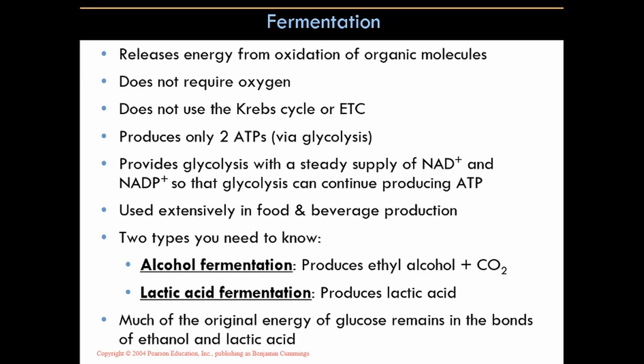Alcohol fermentation produces ethyl alcohol (ethanol) plus carbon dioxide — both are waste products. Lactic acid fermentation produces lactic acid or lactate. This is a very inefficient process: about 90% of the original energy of the glucose molecule still remains in the bonds of the ethanol and lactic acid, which is why you're only getting two ATPs.